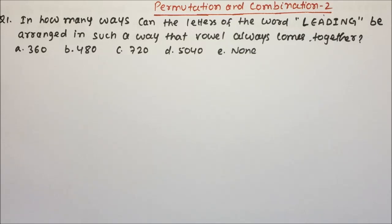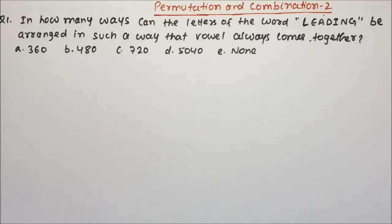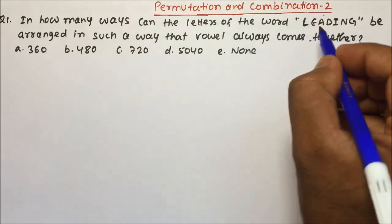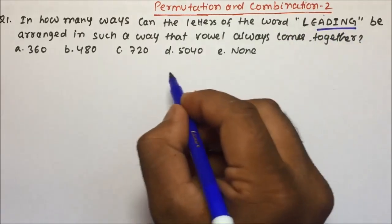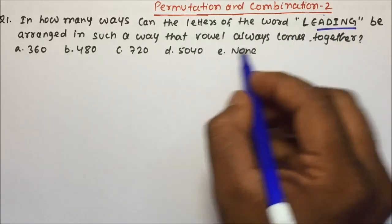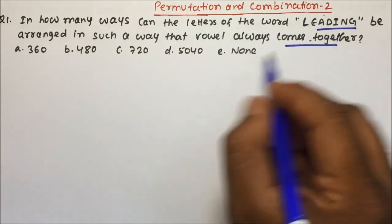Friends, this is the third video on permutation and combination. I will suggest you to please watch the previous two videos on permutation and combination so that you understand the basic concepts and then these questions will become easy for you. We are starting with question number 1: in how many ways can the letters of the word LEADING be arranged such that all the vowels come together?